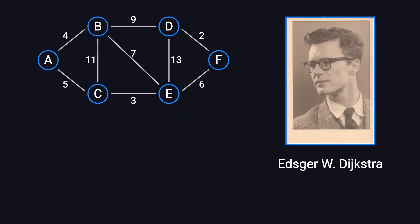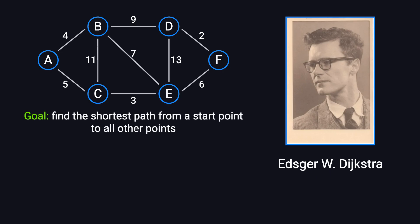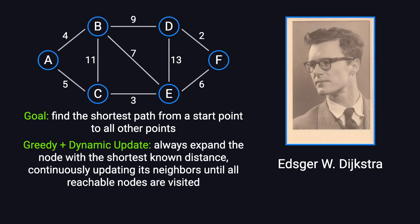The story behind this algorithm is pretty interesting. In 1956, computer scientist Edsger Dijkstra came up with its core idea in under 20 minutes while sitting in a cafe in the Netherlands. His goal was to find the shortest paths from a starting point to all other points, similar to how we look for the fastest route on a map. The algorithm follows a greedy approach with dynamic updates, expanding the node with the shortest known distance first, continuously updating its neighbors until all reachable nodes have been processed.